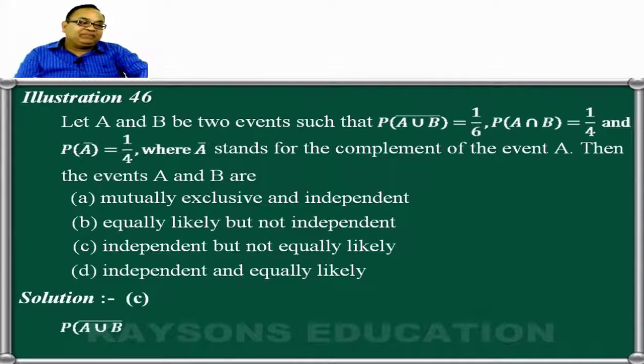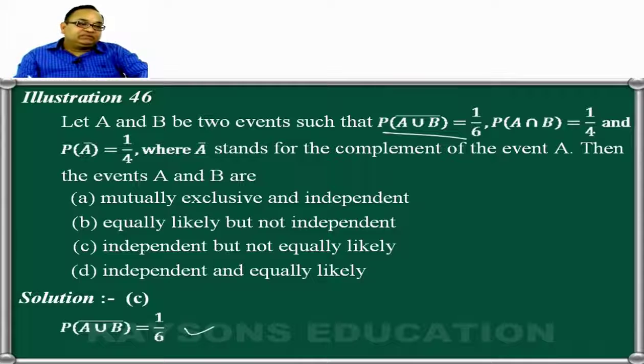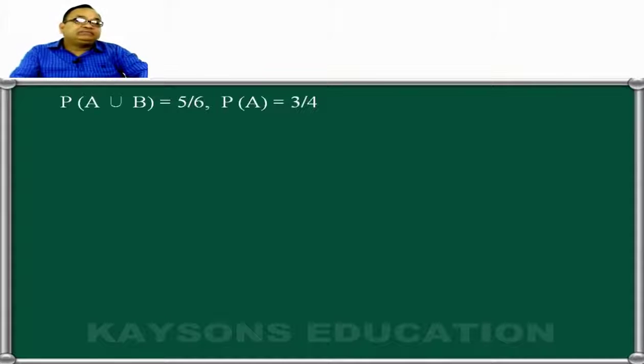What is given? If A union B not happening probability is 1 by 6, then happening will be 1 minus 1 by 6, which is 5 by 6. A happening probability is 3 by 4, given that not happening probability is 1 by 4.